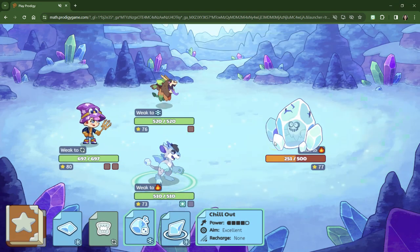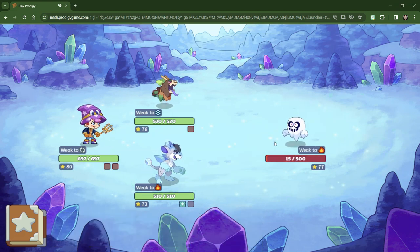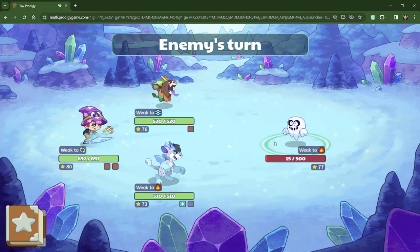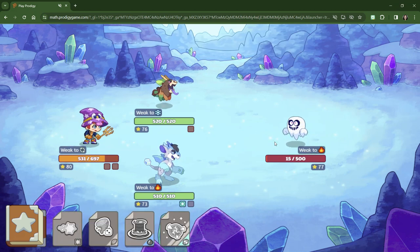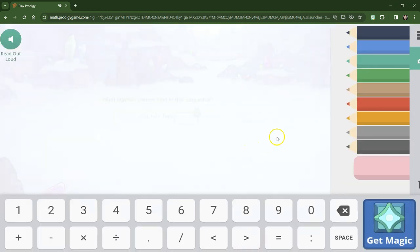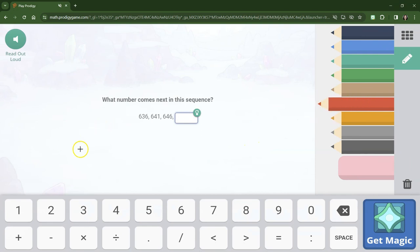Chill out. This will have a better effect. Not quite. Enemy's turn. Looks like we have another question. Now we're going to do it kind of like a number line. So we have six hundred thirty six, seven, thirty eight, thirty nine, forty. Six hundred forty one. Then we add five again. Forty two. Forty three. Forty four. Forty five. Forty six.